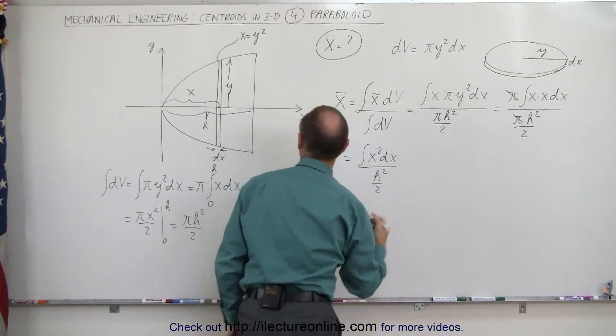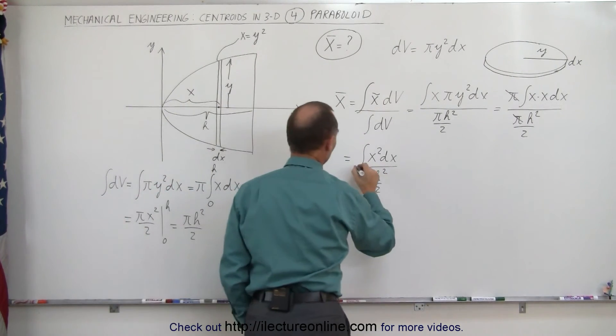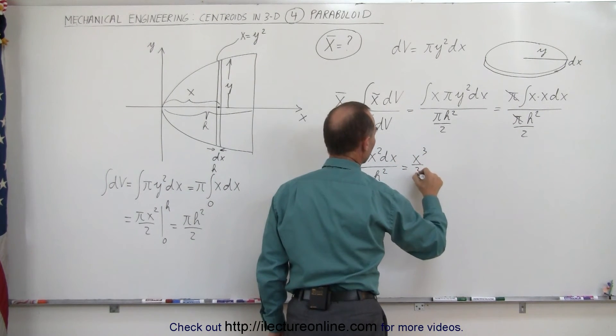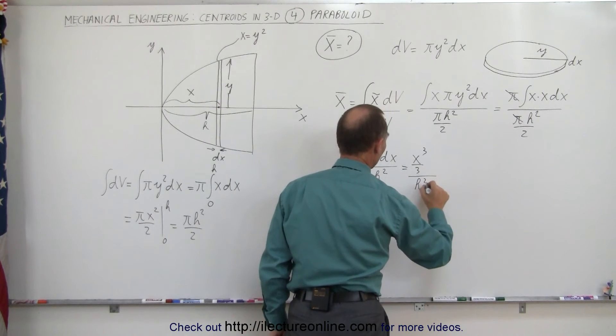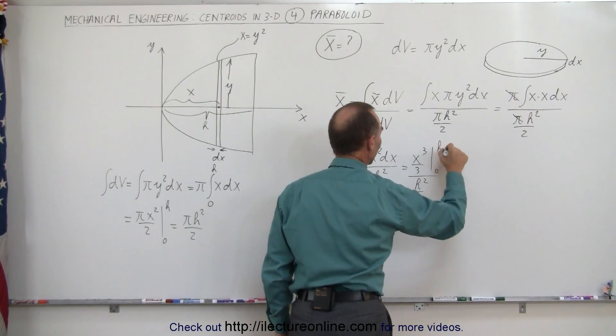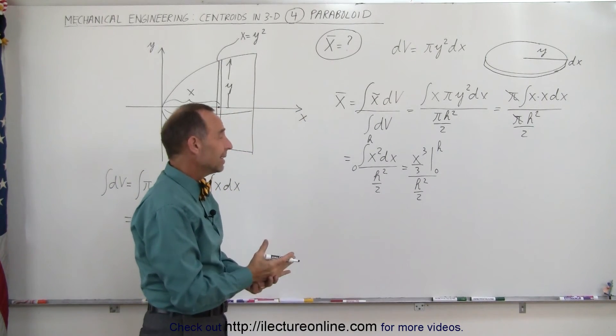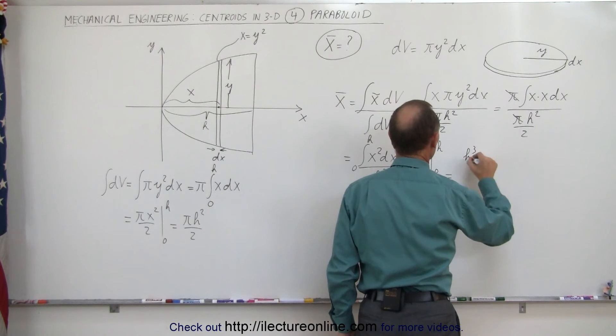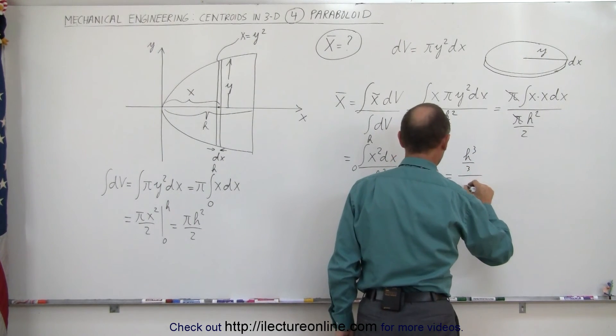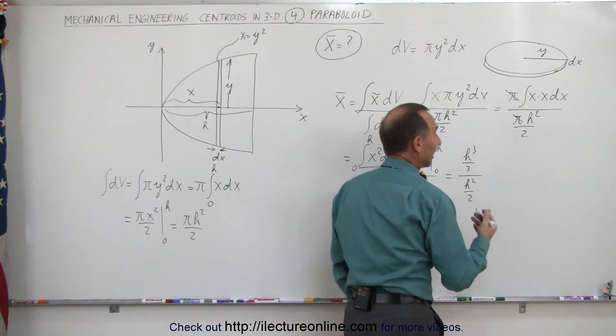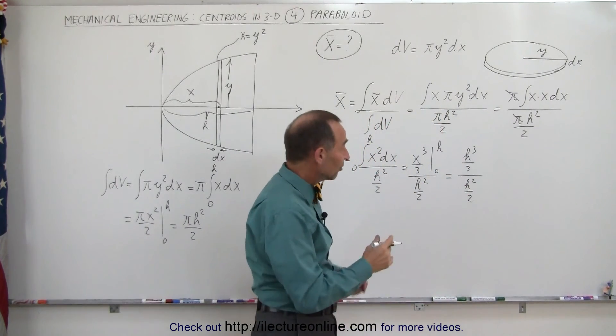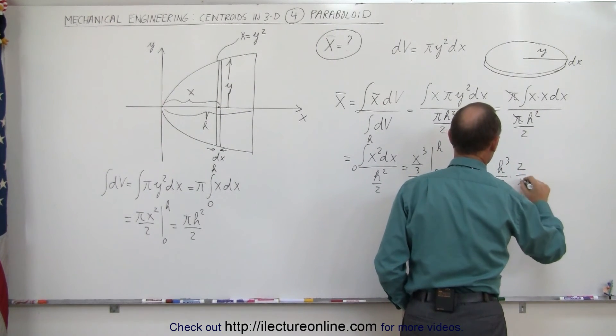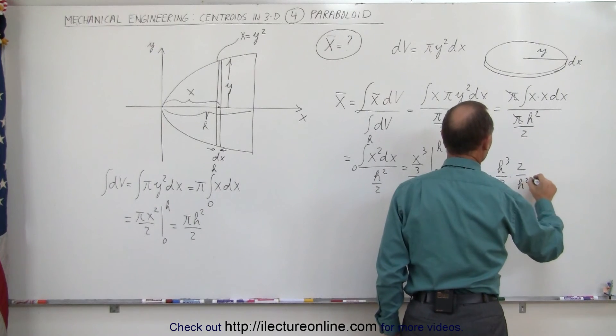We can integrate this, and the limits of integration are going to be from 0 to h. This is equal to x³ over 3, the whole thing divided by h² divided by 2, and evaluate it from 0 to h. When we plug in the lower limit, we get nothing, we get 0, so we only need to plug in the upper limit. This is equal to h³ divided by 3 divided by h² divided by 2. Dividing by a fraction is the same as multiplying by its inverse. This is equal to h³ divided by 3 times 2 over h², and this cancels that. So we end up with 2/3 h as the answer.